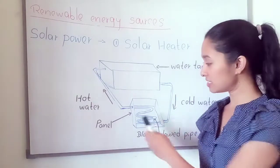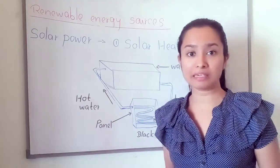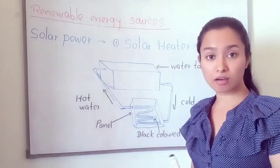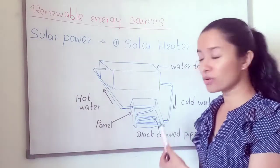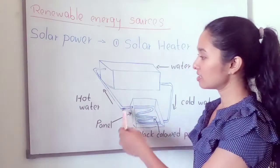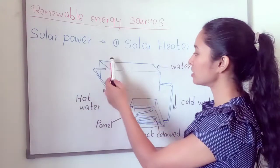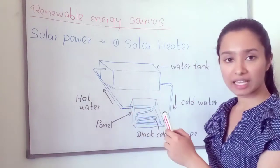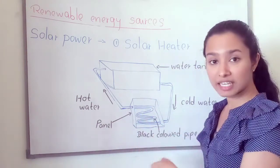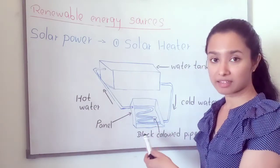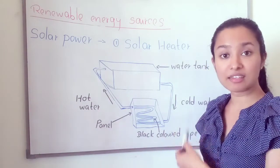The black-colored surface absorbs more heat. The black-colored pipe gets heated by solar heat, and the water inside the pipe also gets heated. The hot water rises and comes to the upper side of the tank through the pipe, while cold water from the lower side of the tank flows to the panel, gets heated again, and returns. This is a continuous process.